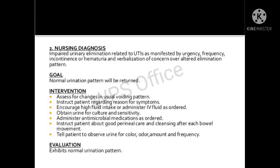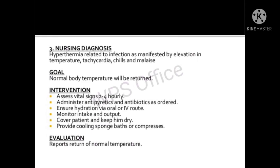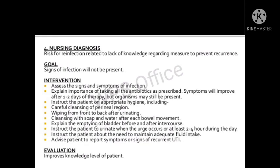The second nursing diagnosis is impaired urinary elimination — assess changes in usual voiding pattern, instruct the patient regarding symptoms, and increase fluid intake or administer IV fluids. The third is hyperthermia, and the fourth is risk for reinfection. The nurse must assess all these and provide psychological support to promote normal urinary voiding.